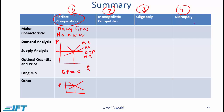In the short run, we might have a situation where there is an economic profit, but that will cause the supply curve for the market to increase because more firms will enter the market, which will cause the price to decrease, and ultimately we will end up at the zero-profit equilibrium point.